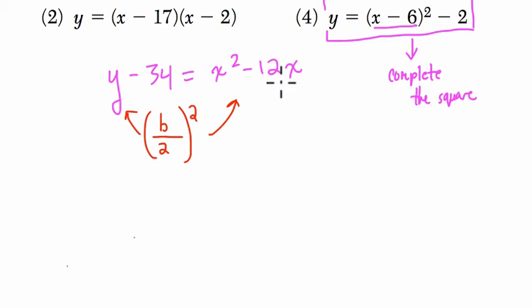So the b term is the term that's usually right next to the x. So in this case, b is negative 12. Don't look at that negative sign. So I take negative 12, I divide it by 2, that's negative 6. Then I take negative 6 and I square it, and negative 6 squared is 36.